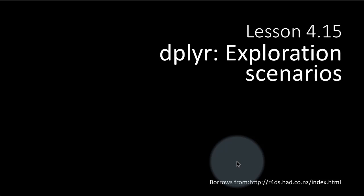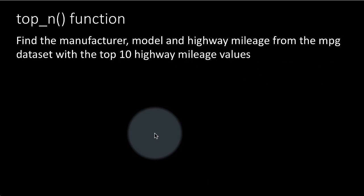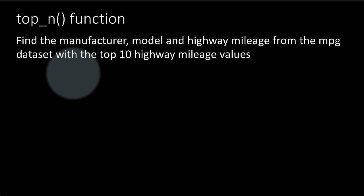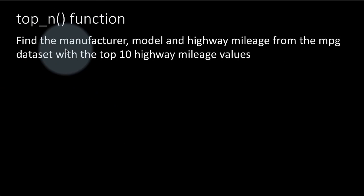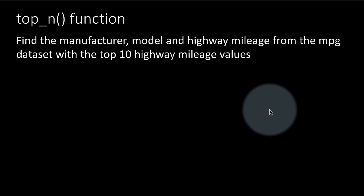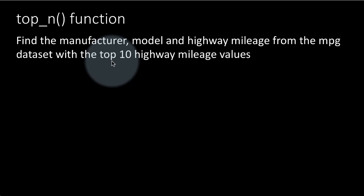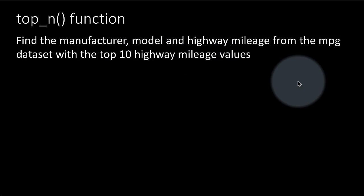Let's round off our discussion of dplyr by looking at some data exploration scenarios and looking at some new functions. The first function we're going to look at is the top_n function, which finds the top n values where we supply the value for n. This question says: find the manufacturer, model, and highway mileage from the MPG dataset for cars with the top 10 highway mileage values.